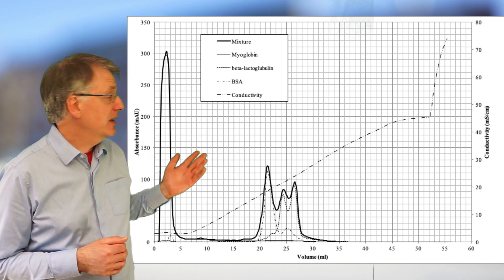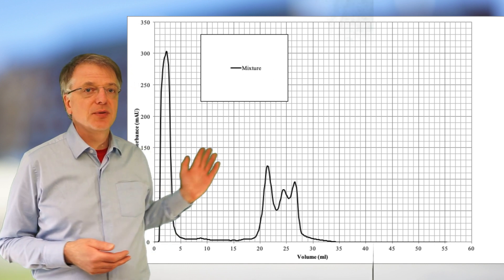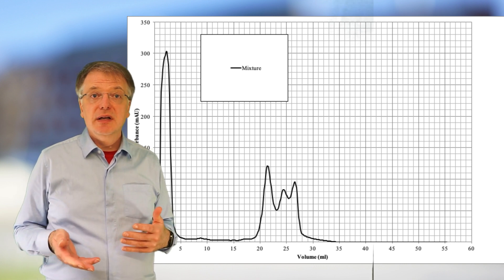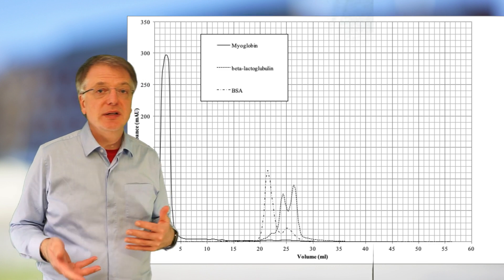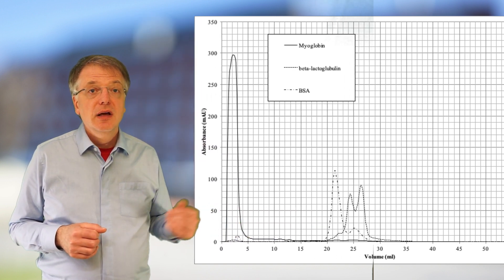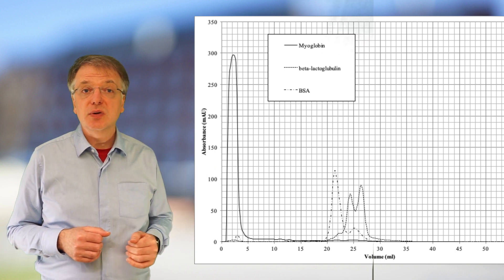So if we take away the measurement of conductivity and the computer simulations we're left with the actual chromatogram. What we're asked to explain is why the different proteins have different residence times and especially why myoglobin comes out so quickly.